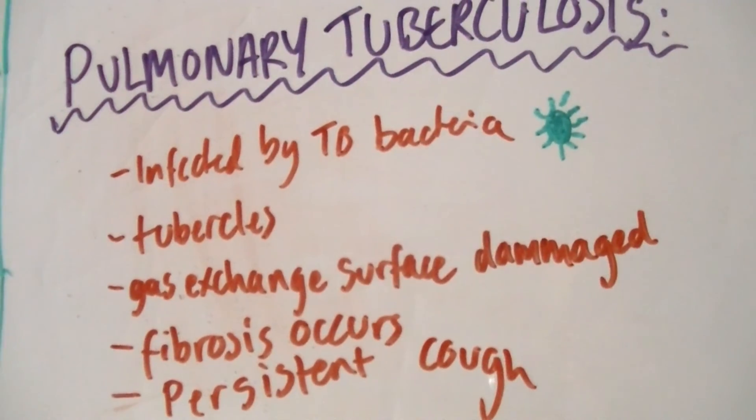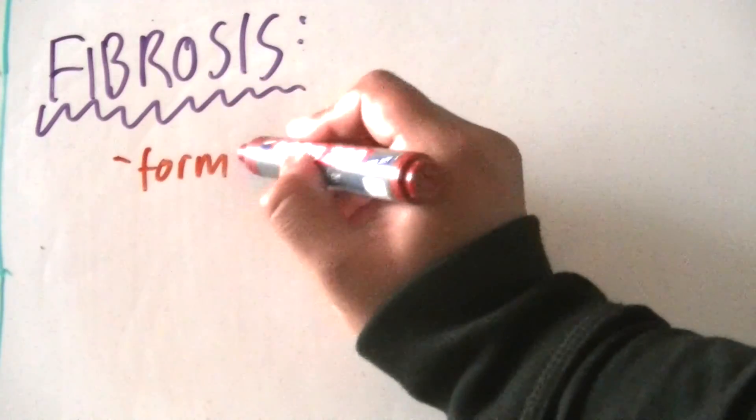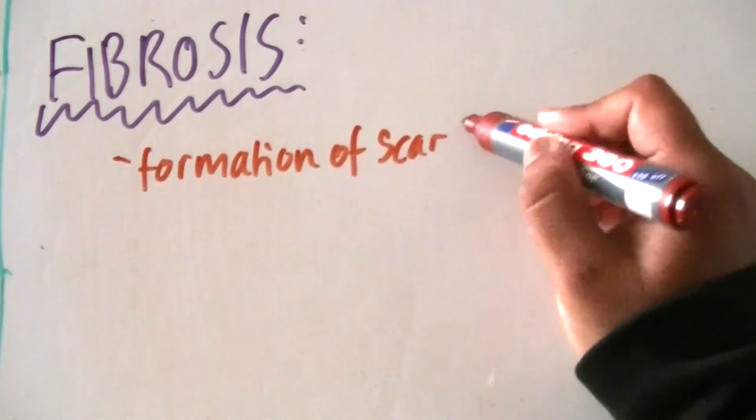Another disease we're going to look at is fibrosis. Fibrosis is the formation of scar tissue. It can be due to an infection or exposure to substances like asbestos or dust. Scar tissue is thicker and less elastic than normal lung tissue.